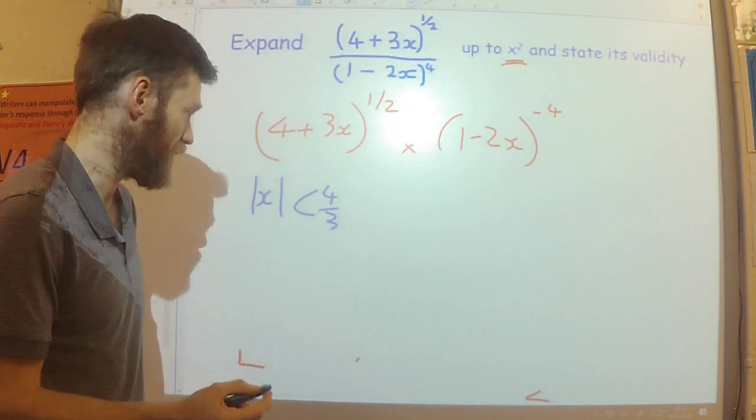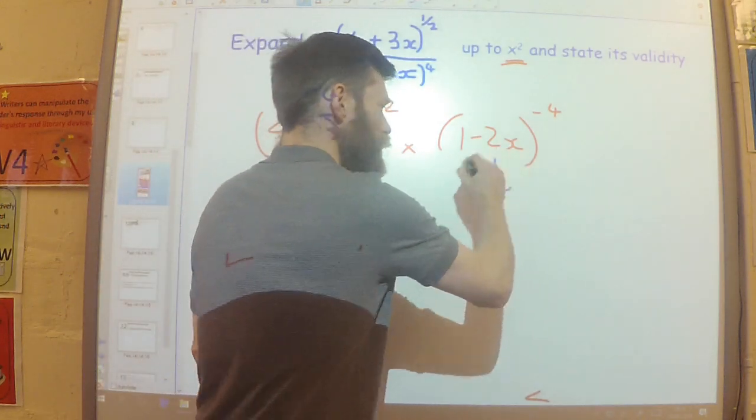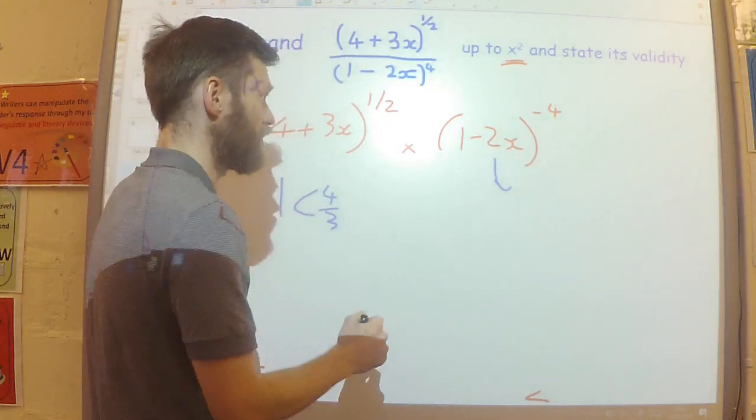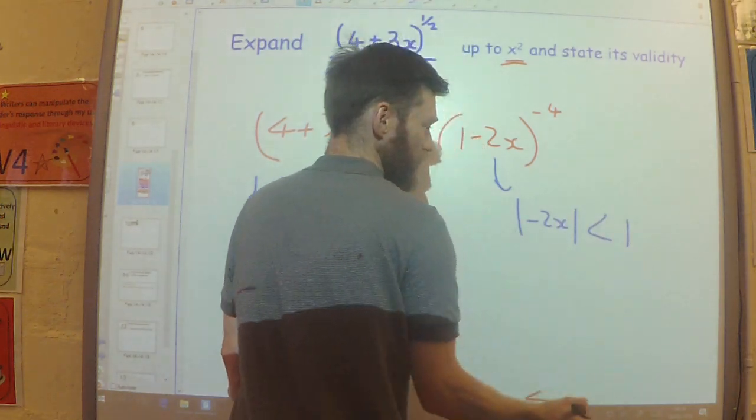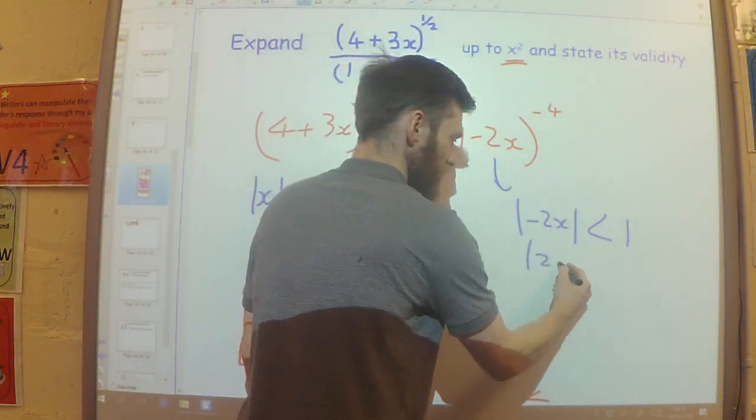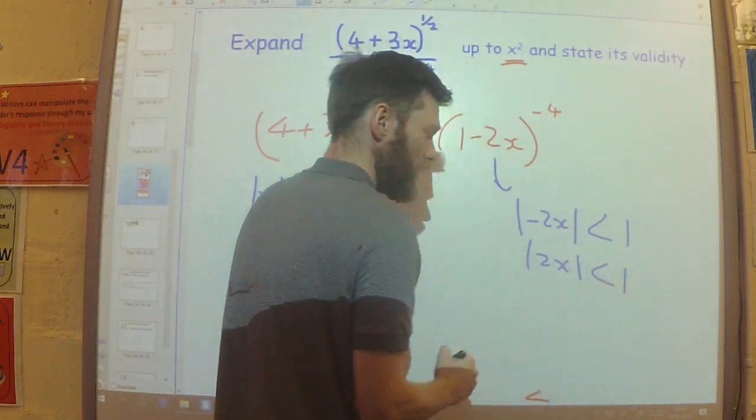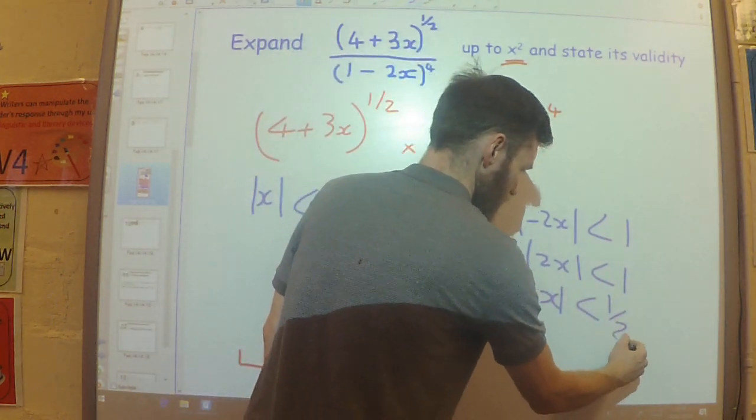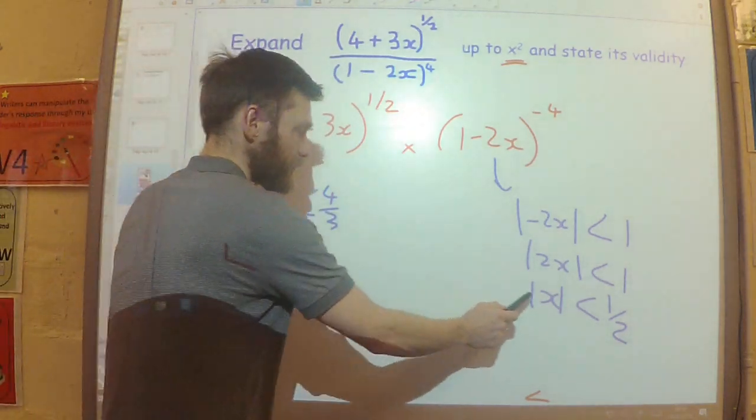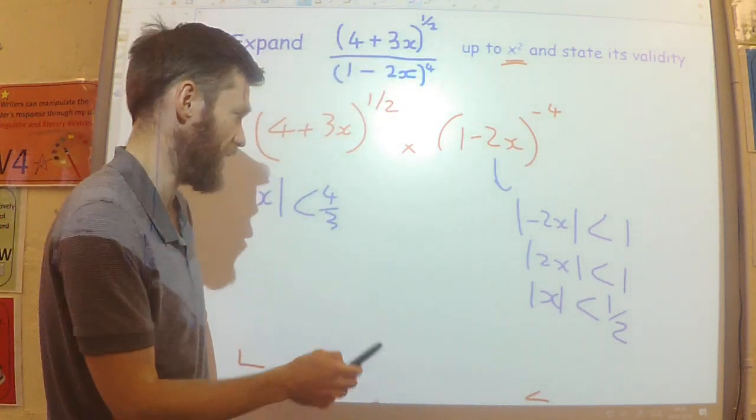For this expansion over here, it just is the 2x here. So the modulus of the minus 2x has got to be less than 1. So the modulus of 2x has got to be less than 1. So the modulus of x has got to be less than 1 half.